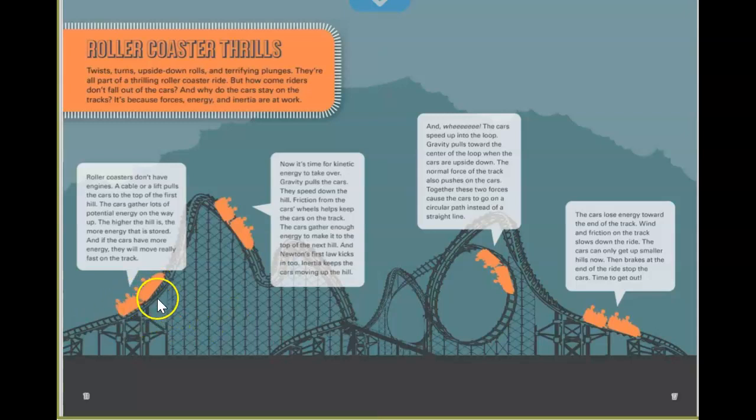Now it's coming to the top. Now it's time for kinetic energy to take over. And gravity pulls the cars. They speed down the hill. And friction from the car's wheels helps keep the cars on the track. The cars gather enough energy to make the top of the next hill. And Newton's first law kicks in too. Inertia keeps the cars moving up the hill. The cars speed up to the loop. And gravity pulls to the center of the loop when the cars are upside down. The normal force of the track also pushes on the car. And together, these two forces cause the cars to go in a circular path instead of a straight line. That'd be freaky.